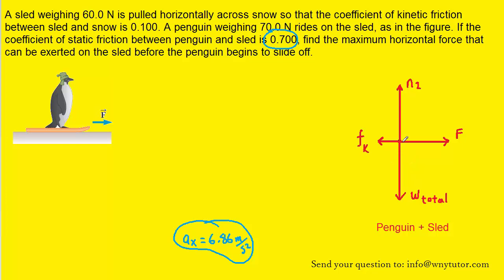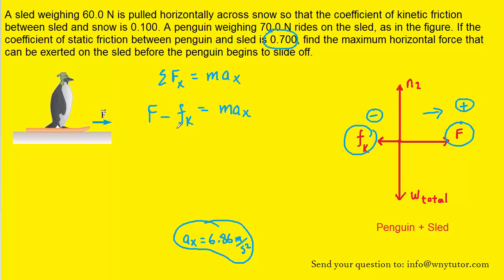In this second free body diagram, the objects are accelerating in the x direction to the right, with no acceleration in the y direction. Writing Newton's second law in the x direction, the two forces acting are the pulling force and the kinetic frictional force. The kinetic friction points left and gets a negative sign; the pulling force points right with a positive sign. The kinetic frictional force is replaced by mu_k times the normal force N2.